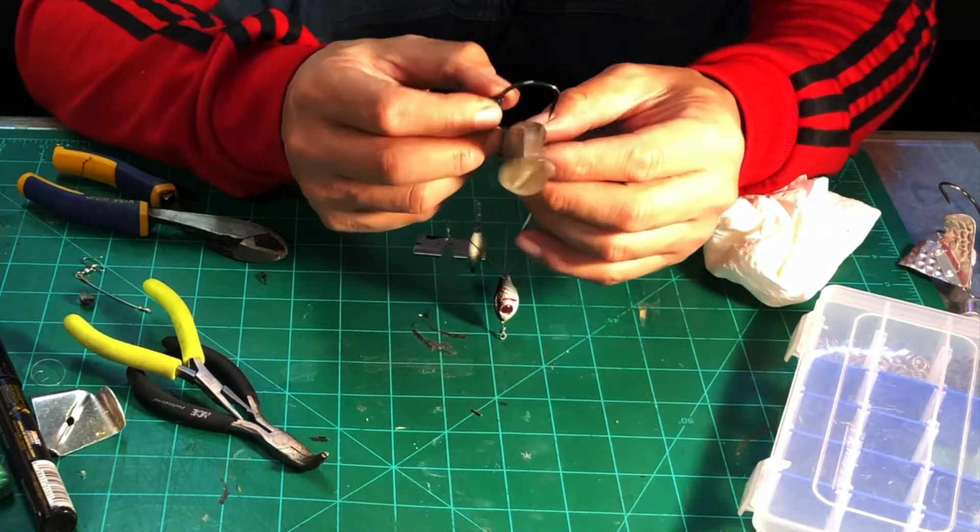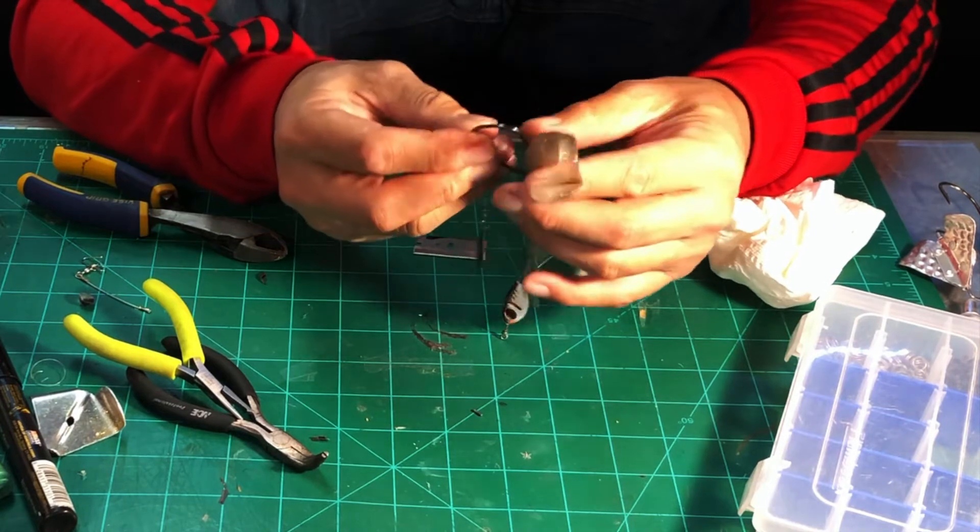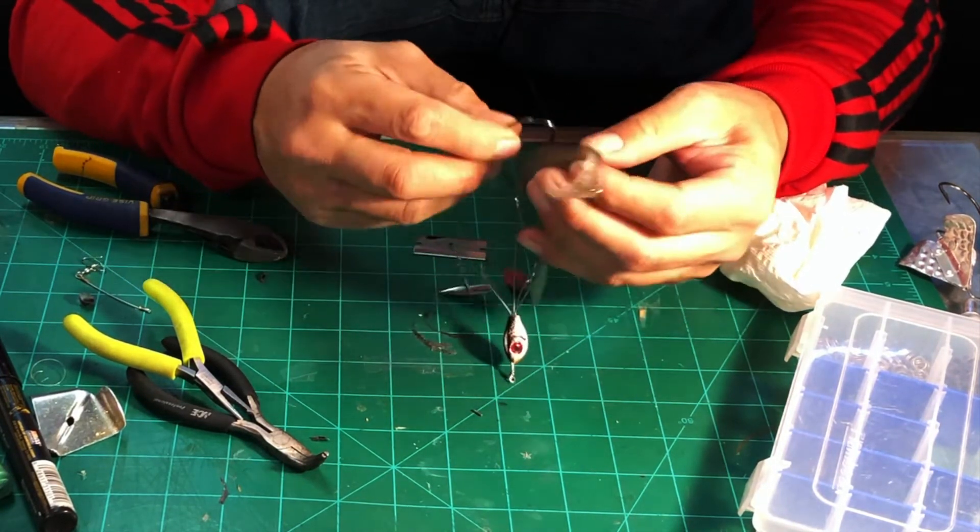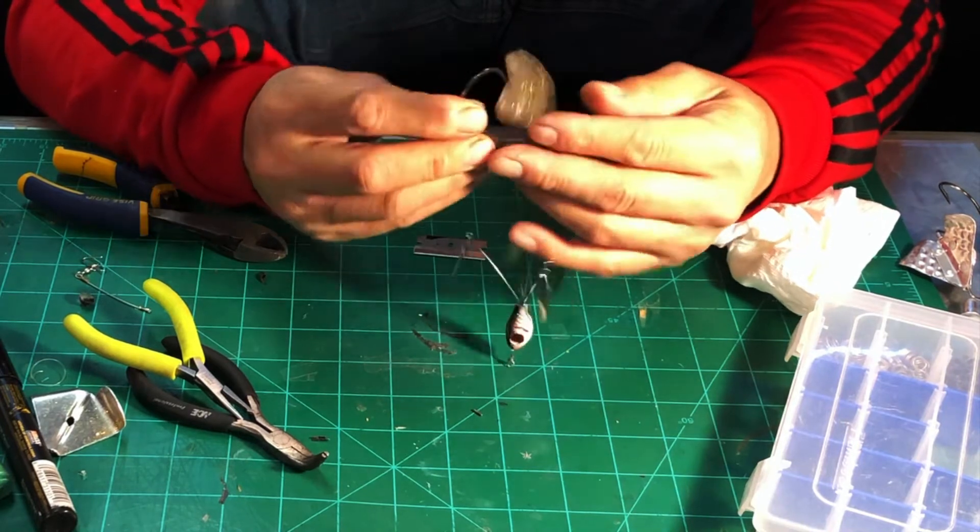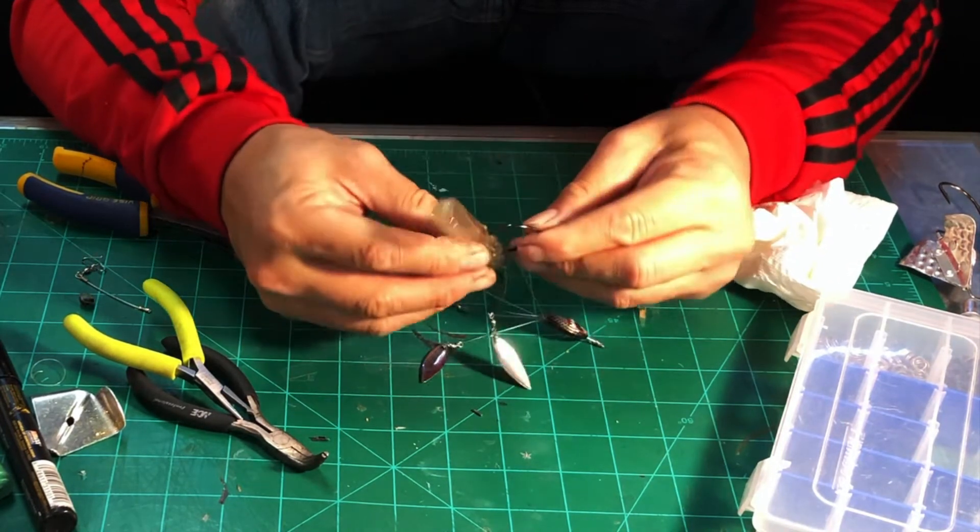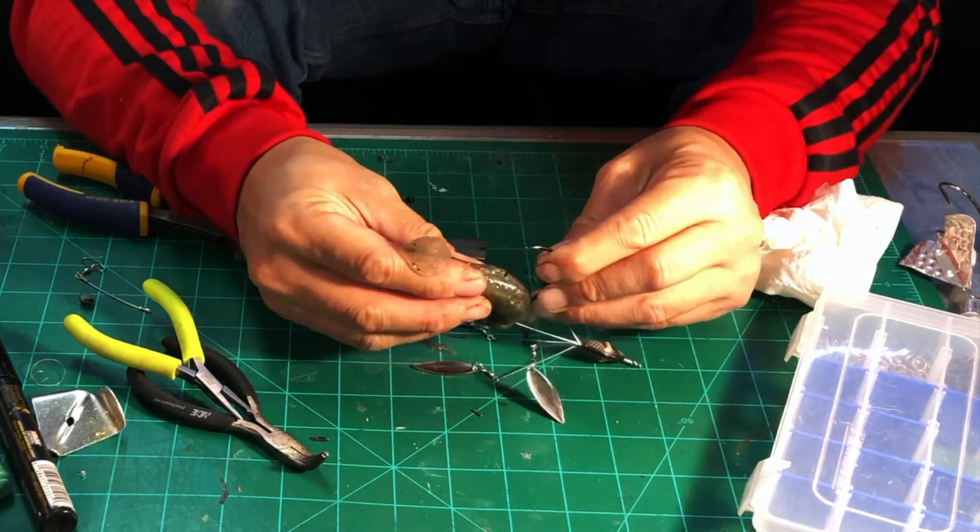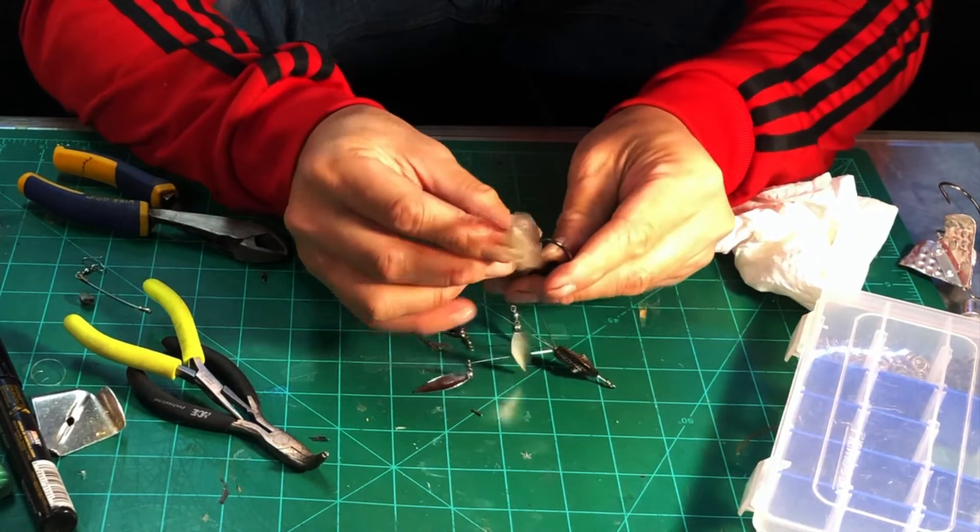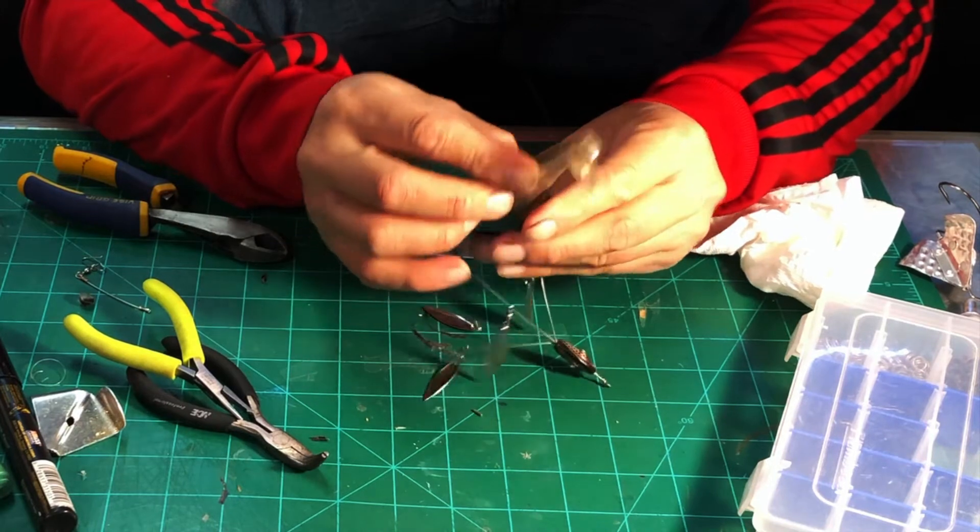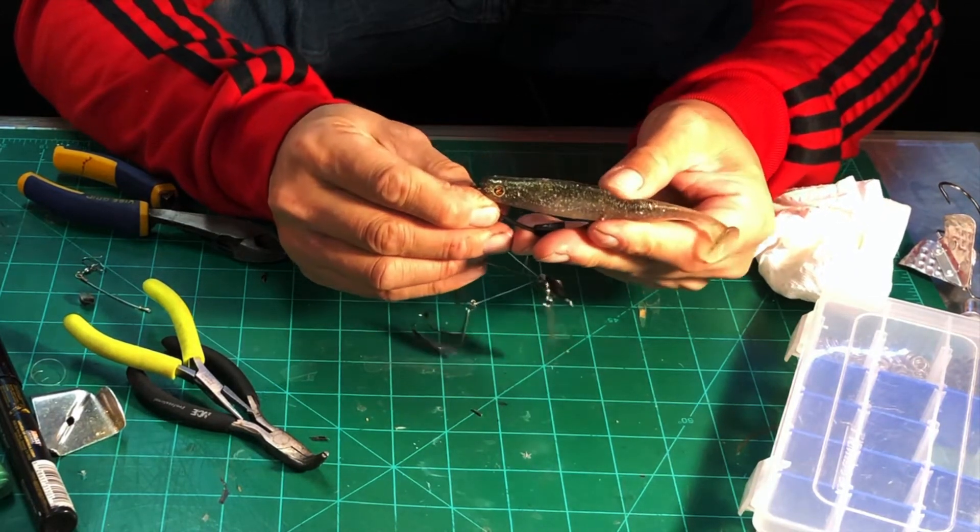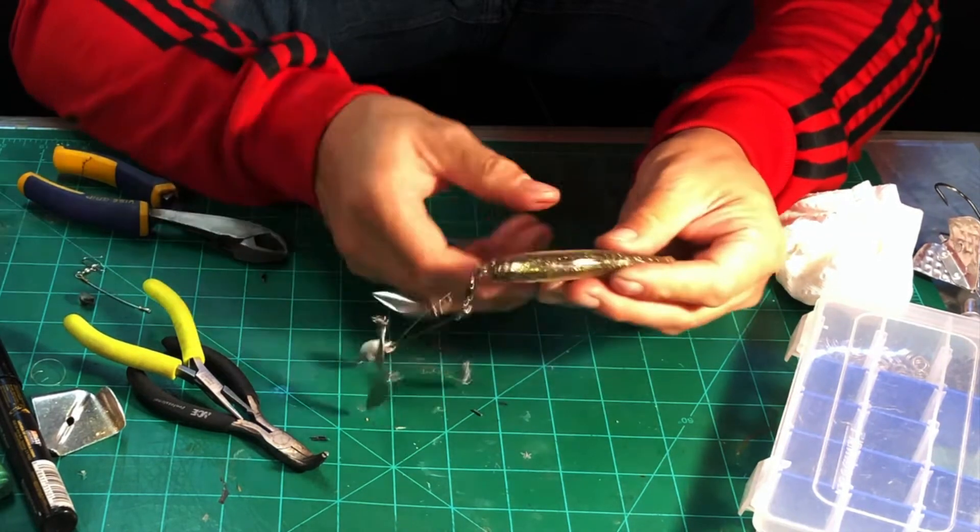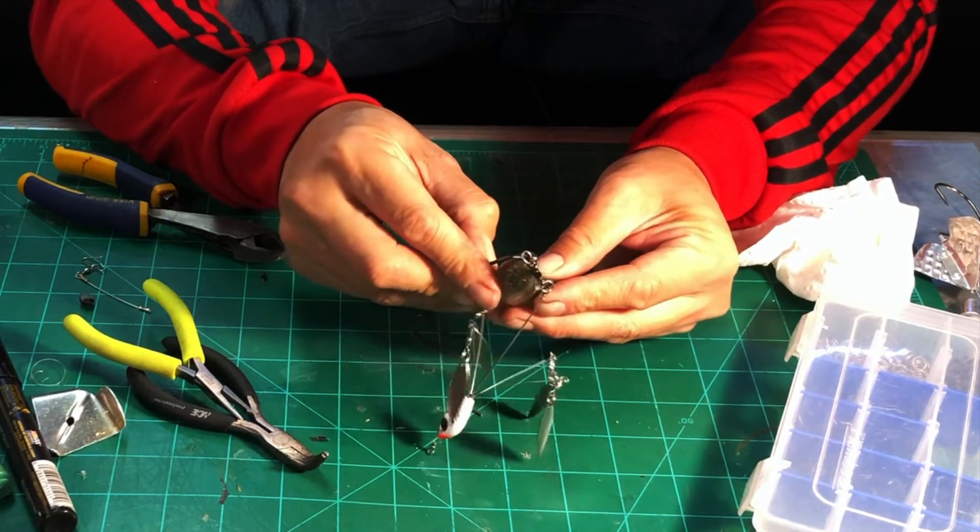That you would want in, say, like a swim jig or just fishing it as a swimbait. So just line this up like you would any other swimbait to get it straight. There you go. Almost—it's a little short still.